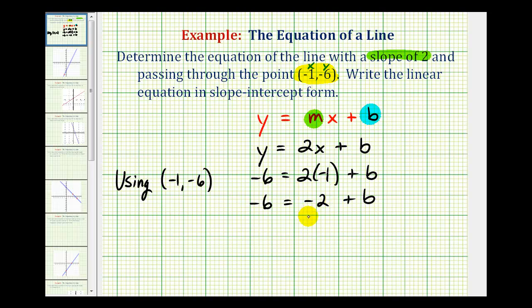And then to solve for b, we'd have to add two to both sides of the equation. This would be zero. So we have b equals, this would be negative four.